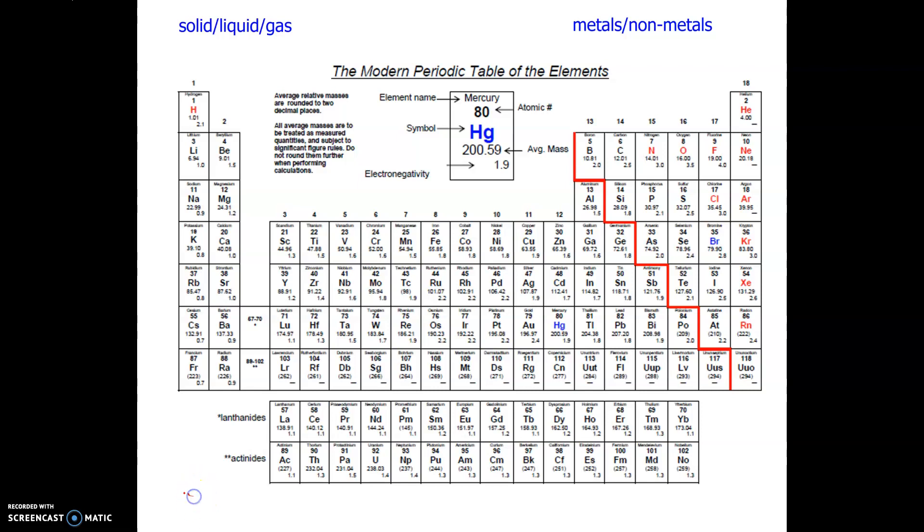So this periodic table, if you notice the following elements in red, we got hydrogen and then we got this block. All these elements in red are gases, so I'm just going to put over here gases.